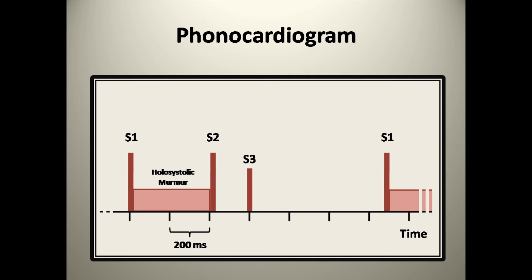In Tholius' question, he raised the issue about whether or not the word Kentucky can be used to check the cadence of an extra sound to determine if it's an S3 or S4. How that works is if the cadence of sounds matches the cadence of the word Kentucky, this suggests an S3 is present. This is a frequently taught technique, which I think works pretty well here.